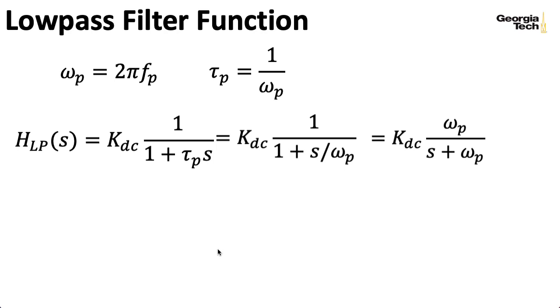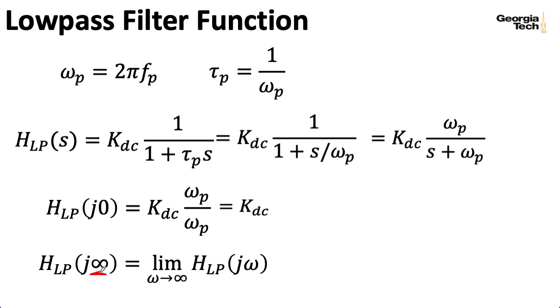So if we compute the frequency response at zero by plugging in jω for s, and then evaluating that at ω = 0, this s spot winds up going away, and then the remaining ω_p's cancel, and you get K_DC. So this was properly named. Now, what if we let ω go to infinity? I'll quite often just stick infinity in here in the argument. Technically, that means take the function of ω and take the limit as ω goes to infinity. And if we plug in jω for s and let ω go to infinity, eventually the ω going to infinity is going to swamp this constant ω_p term. And you have a constant over something going to infinity, so that goes to zero.